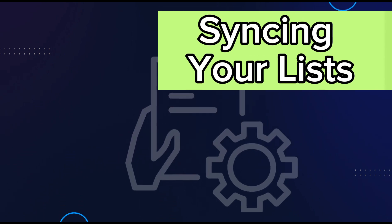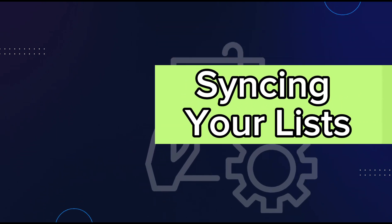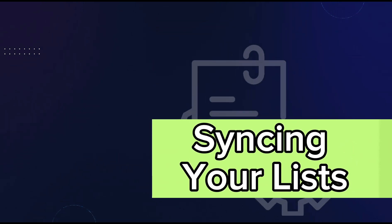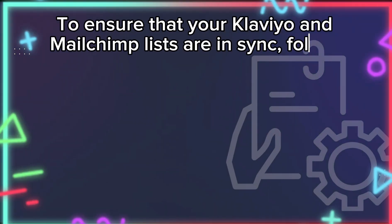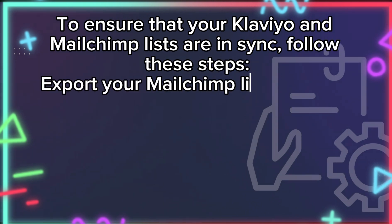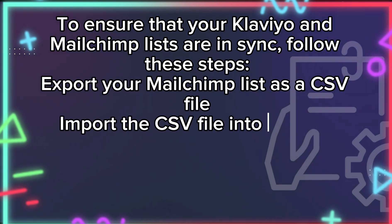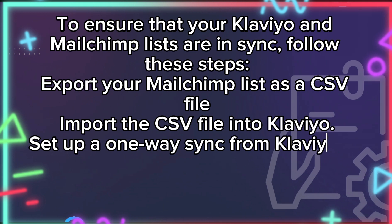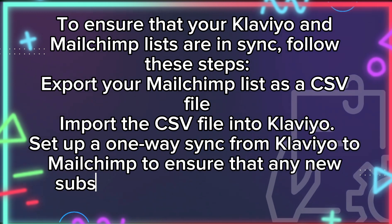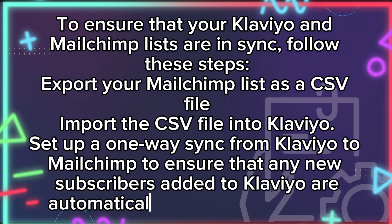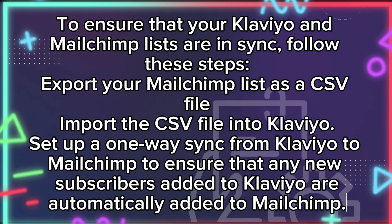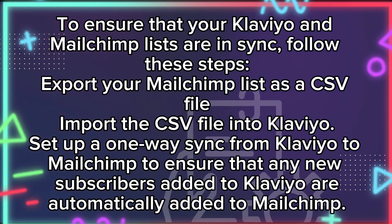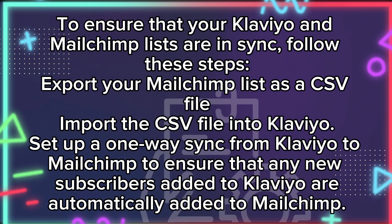Syncing your lists. To ensure that your Klaviyo and MailChimp lists are in sync, follow these steps: Export your MailChimp list as a CSV file, import the CSV file into Klaviyo, and set up a one-way sync from Klaviyo to MailChimp to ensure that any new subscribers added to Klaviyo are automatically added to MailChimp.